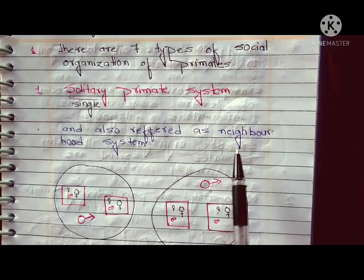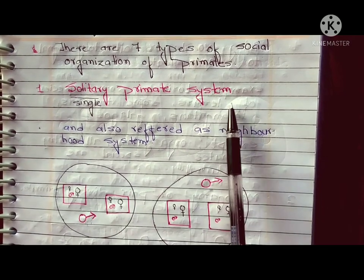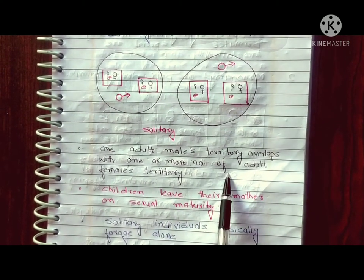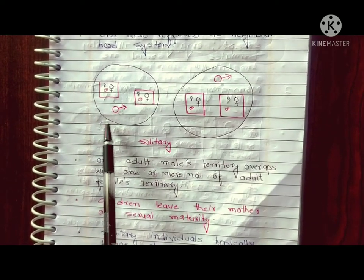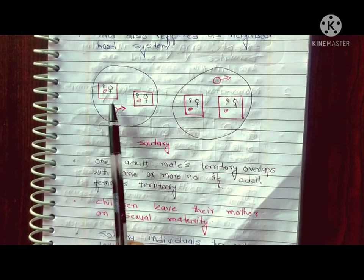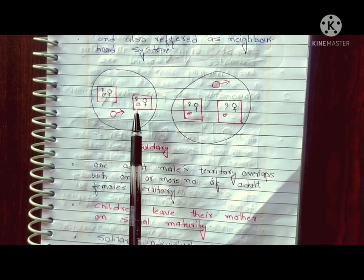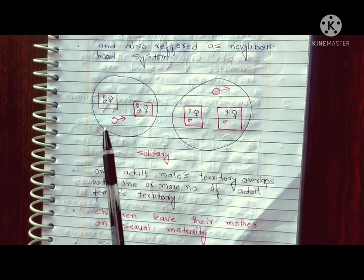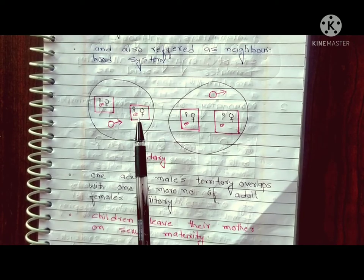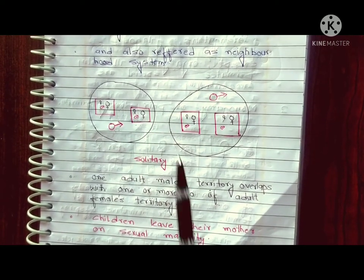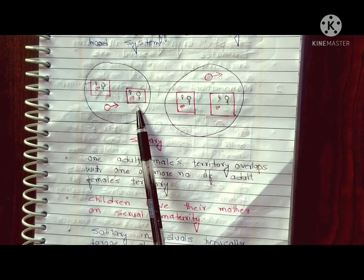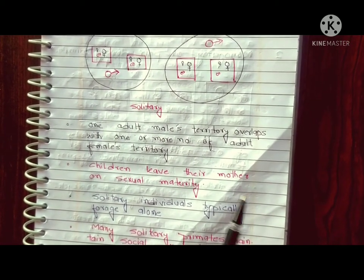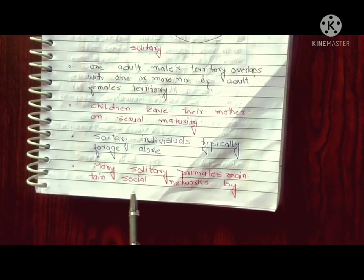First, let's see the solitary primate system. In this system, an adult male overlaps the territory of one or more adult females. The offspring live with the mother, but as they become sexually mature they leave. Individuals in the group do foraging, and solitary individuals typically forage alone.